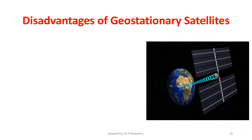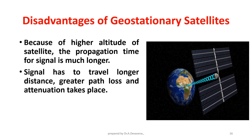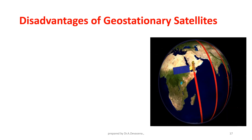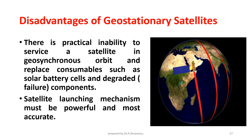Disadvantages of geostationary satellites. Because of the higher altitude of the satellite, the propagation time for the signal is much longer. The signal has to travel a longer distance, so greater path loss and attenuation takes place. Therefore, highly sensitive receivers are required. There is a practical inability to service a satellite in geosynchronous orbit and replace consumables such as solar battery cells and degraded components. The satellite launching mechanism must be powerful and most accurate.